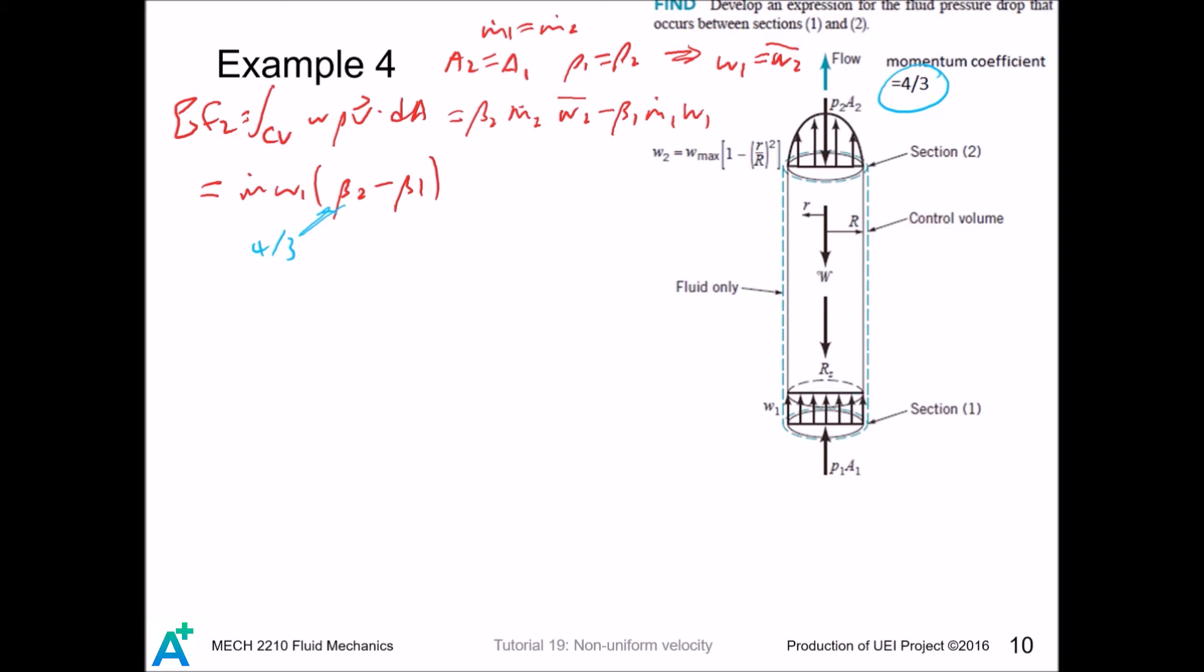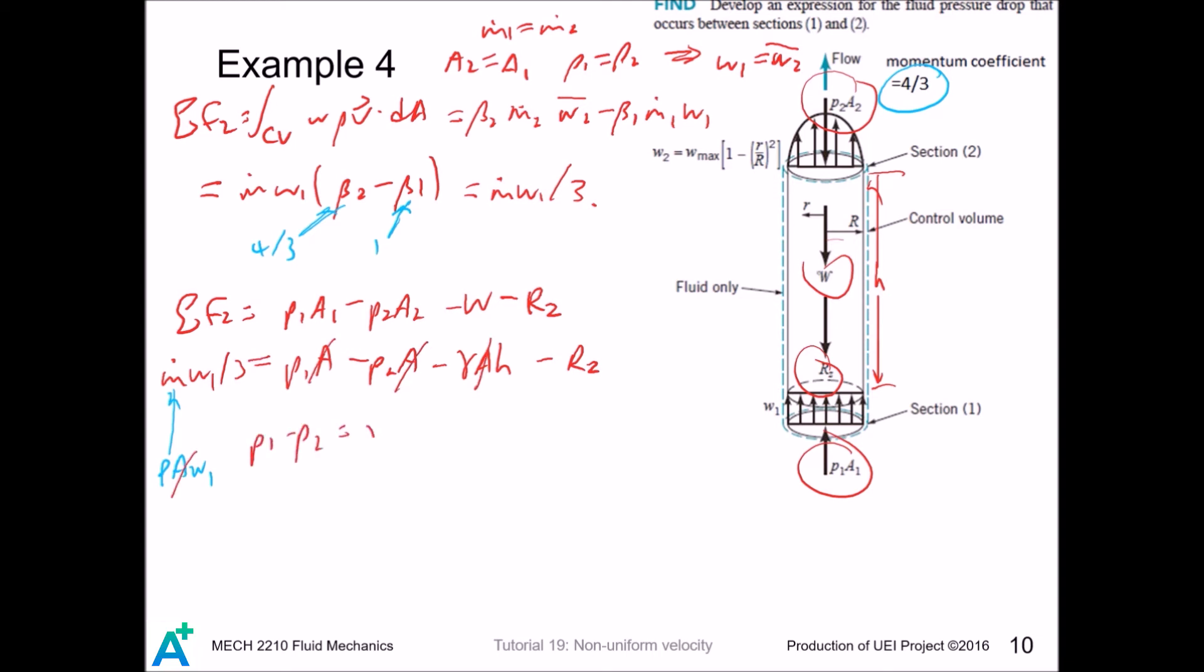This is 4 divided by 3, and it's written down here. And for section 1, the velocity profile is uniform, so this is 1. Again, we have 4 forces acting on the control volume. All areas are the same. Again this stands as h. And this one is rho a w, so the a cancels out. And p1 minus p2 equals... This is our expression. We see that using coefficient is much more convenient.